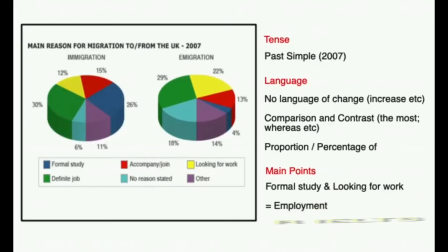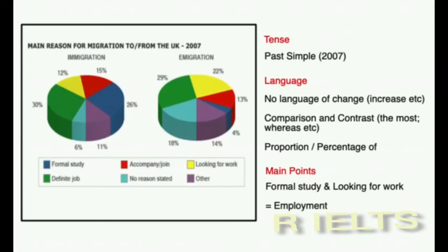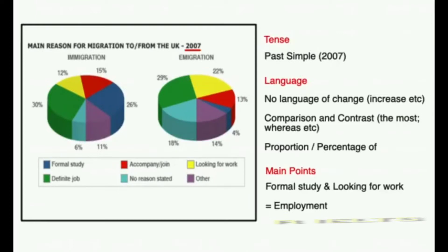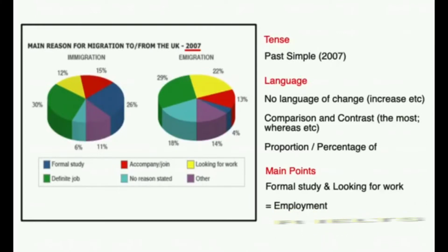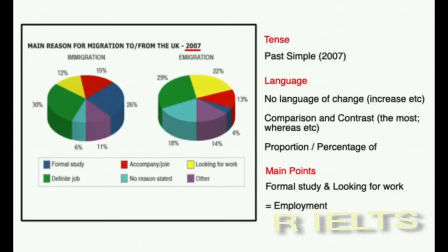Let's look at some of the key things that you should do to answer this question. Firstly, you will note that it has a year which is 2007. That means that the tense you have to use to describe the IELTS pie chart is the past simple. Secondly, regarding the language, as this is one fixed year you cannot talk about changes such as increases and decreases.